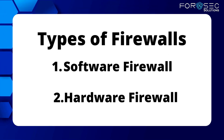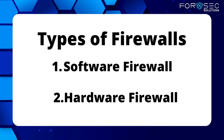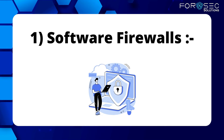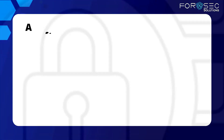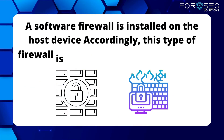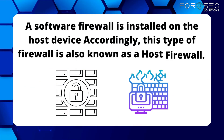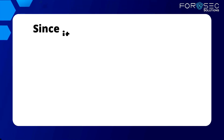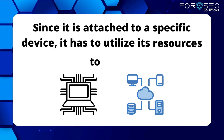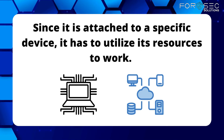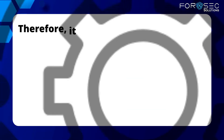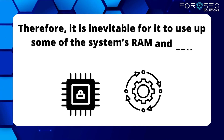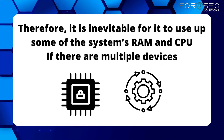There are two types of firewalls: software firewalls and hardware firewalls. A software firewall is installed on the host device. This type of firewall is also known as a host firewall. Since it is attached to a specific device, it has to utilize its resources to work. It is inevitable for it to use up some of the system's RAM and CPU.